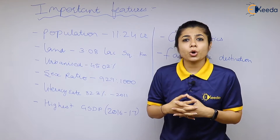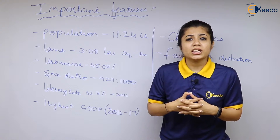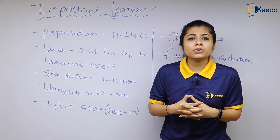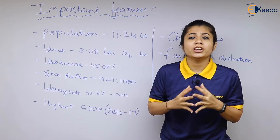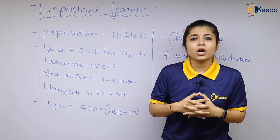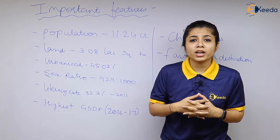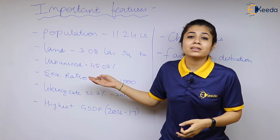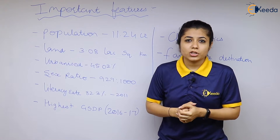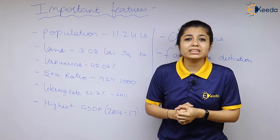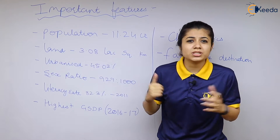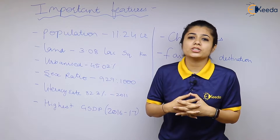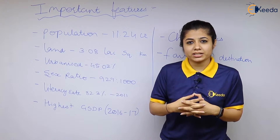The second feature of the economy of Maharashtra is that it is a huge state. In terms of area also, it is the third largest state. The area of the entire state of Maharashtra is 3.08 lakh square kilometers. It has a lot of area, so a lot of different occupations can be practiced in our state.